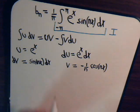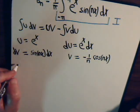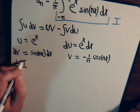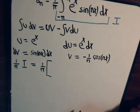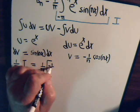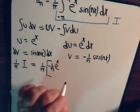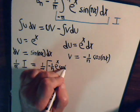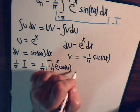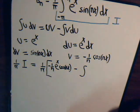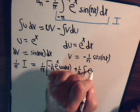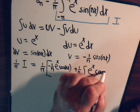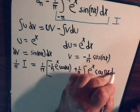So what we have is one over pi times the integral I equals one over pi times uv minus the integral of v du. uv gives us minus one over n times e to the x times the cosine of nx. Then minus the integral of v du gives us plus one over n times the integral of e to the x times the cosine of nx dx.